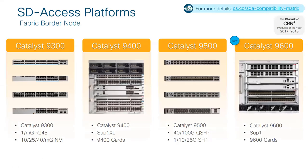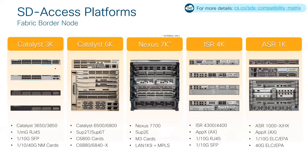For border node platforms, Catalyst 9K — all except 9200 due to the same database limitation — and traditional networking like Cat 3K, 6K, ISR, and ASR can act as border nodes. Notably, the Nexus 7K can also act as a border node, making it one of the few Nexus devices that can hold a fabric role.